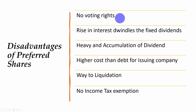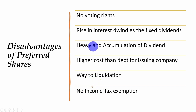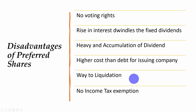One, they have no voting rights. Any rise in the interest rate will affect the fixed dividend, because the dividends are not flexible. Also, there is heavy accumulation of dividend, and there is high cost of debt for issuing companies. Also, there is a path to liquidation — this means that when the company does not make enough profit, the preferred stockholder will insist on their dividend. And finally, no income tax exemption.